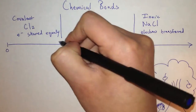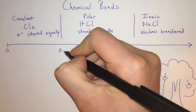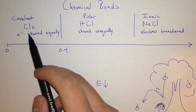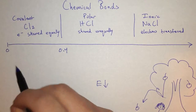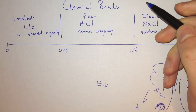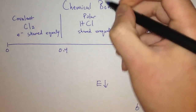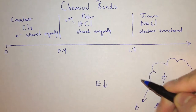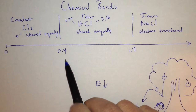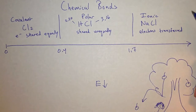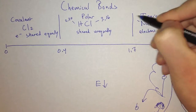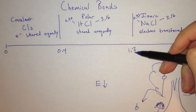In our class, we define a covalent bond as a difference of 0 to 0.4 on the Pauling scale between the two atoms. Chlorine's electronegativity is 3.16 and it's bonded to itself, so the difference is zero. A polar covalent compound is between 0.4 and 1.7 — for example, hydrogen's electronegativity is 2.20 and chlorine's is 3.16, so the difference is about 1. An ionic bond has a difference greater than 1.7; chlorine is 3.16 and sodium is 0.93, which is definitely greater than 1.7.